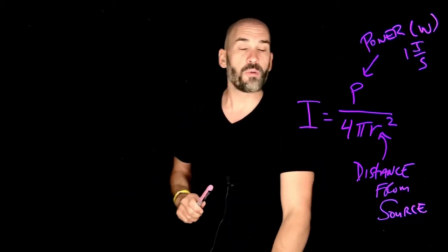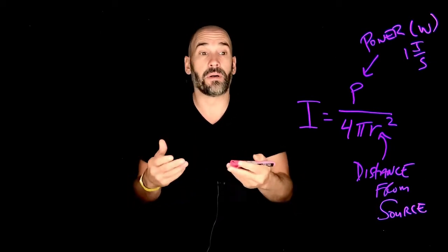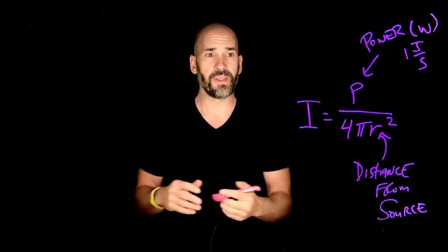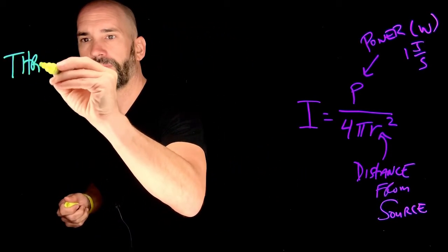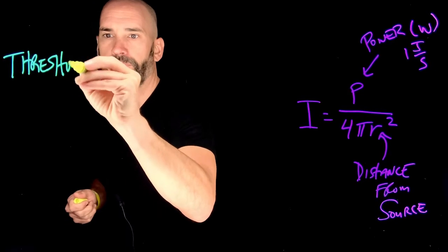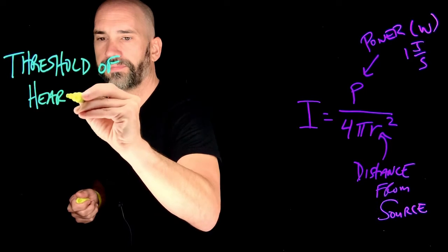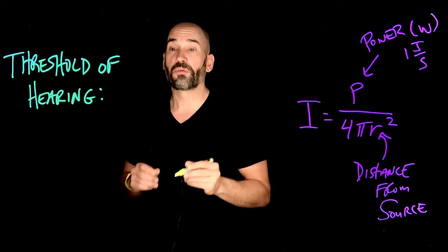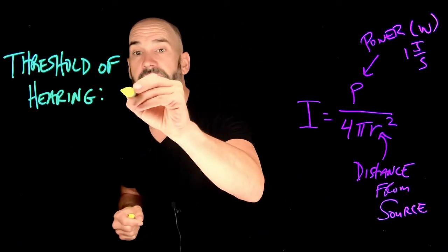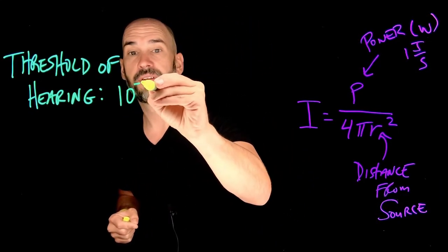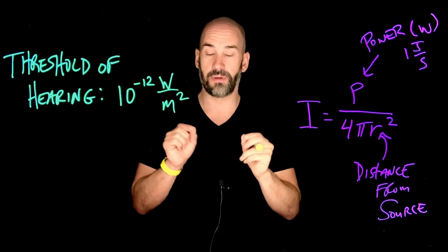Along with this, I need to share a few important constants — like, what is the minimum amount of sound intensity that humans are actually able to hear? This is called the threshold of hearing. The minimum sound intensity we're capable of hearing is 10 to the minus 12 watts per meter squared.